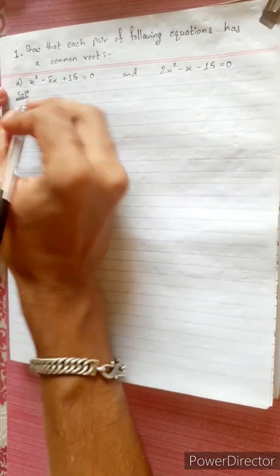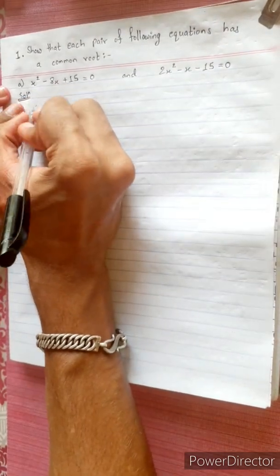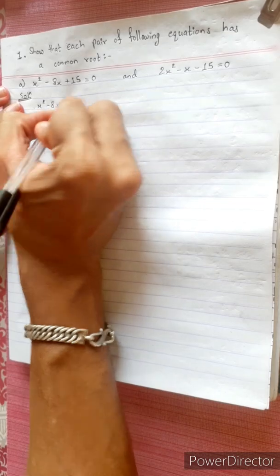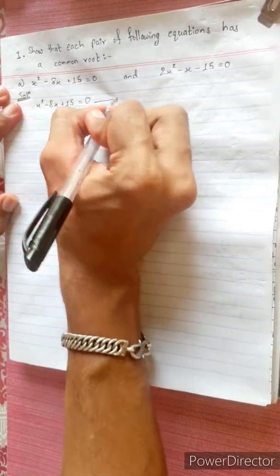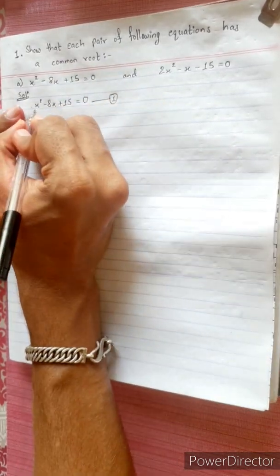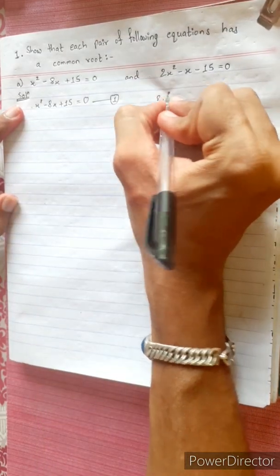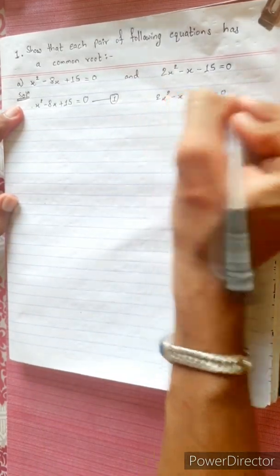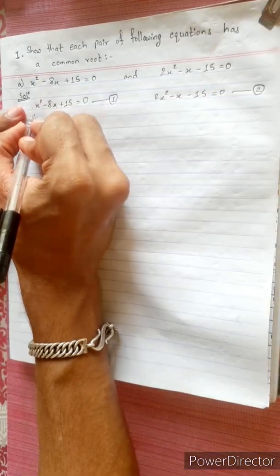We will need this method. We will compare it. x squared minus 8x plus 15 equals 0 — we will call this equation 1. Then equation 2: 2x squared minus x minus 15 equals 0. Then we will compare them.